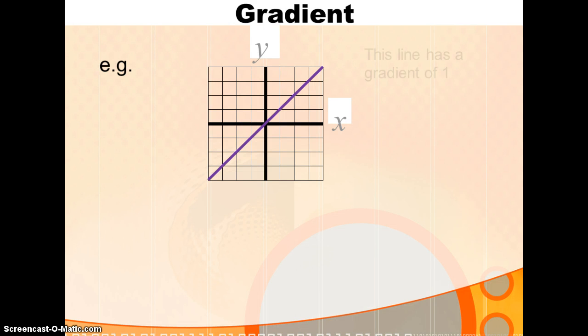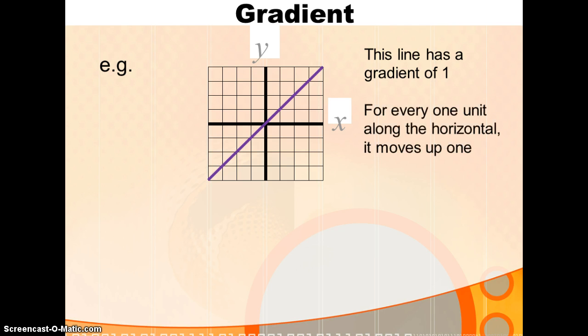Looking at this line, this line has a gradient of one. Why? Well, as we go one across, we climb up one. One across, one up. One across, one up. And so on.